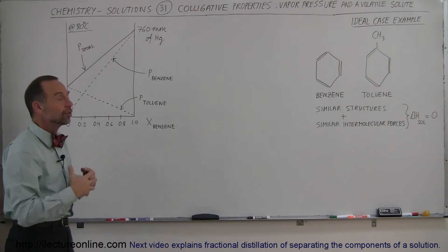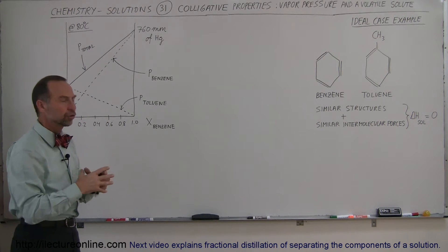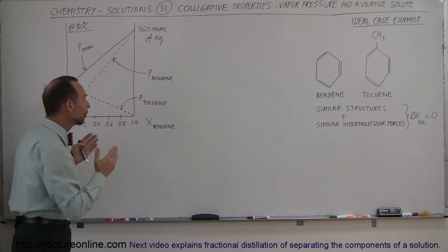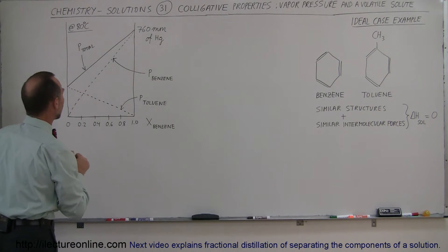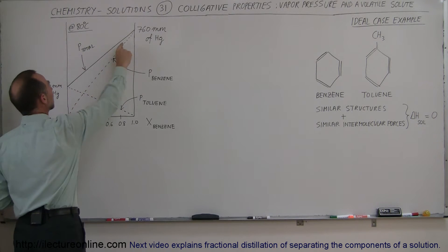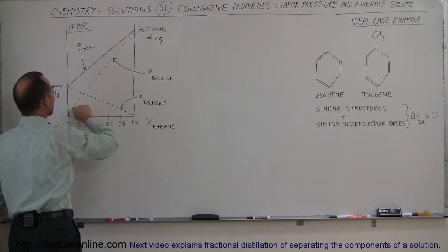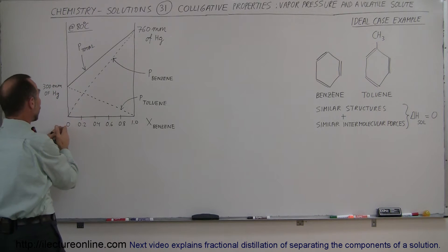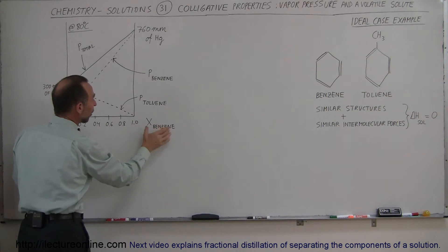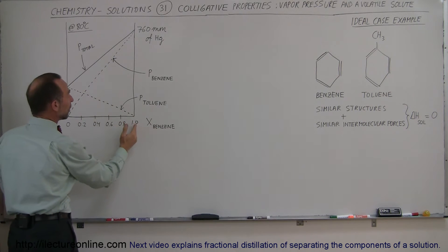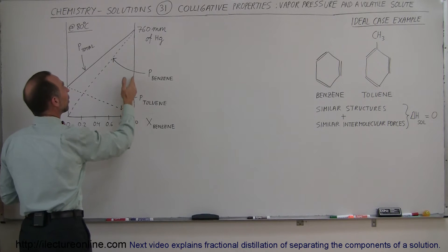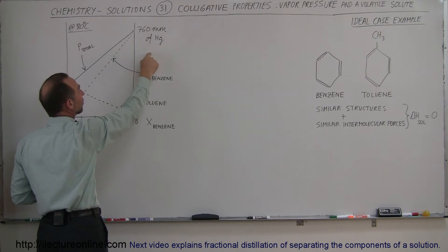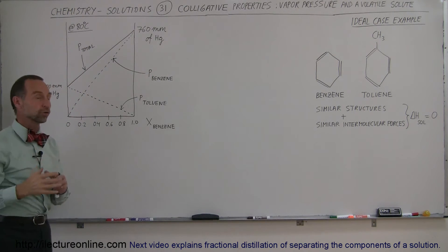So if we mix the two together, what is the vapor pressure of a solution that has both benzene and toluene in it? That depends upon how much of each we have. Here we have a chart that shows, looking at this dashed line, the vapor pressure contributed by benzene depending upon what the molar fraction of benzene is. If the entire solution is benzene, then 100% of the vapor pressure is contributed by benzene, and that equals the total vapor pressure of the solution.